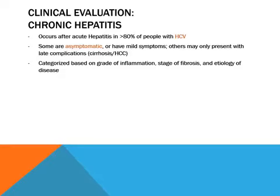Most patients with hepatitis A and hepatitis E do not progress to a chronic state. Most patients with hepatitis B clear the disease, and only 15 to 20 percent progress to chronic hepatitis. Some of those who develop chronic hepatitis remain asymptomatic with mild symptoms, and may later present with complications like portal hypertension, cirrhosis, upper GI bleed, and hepatocellular carcinoma.